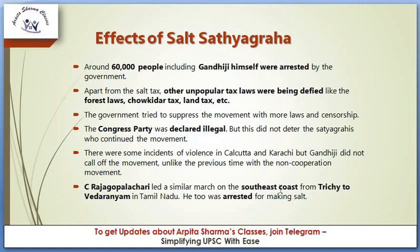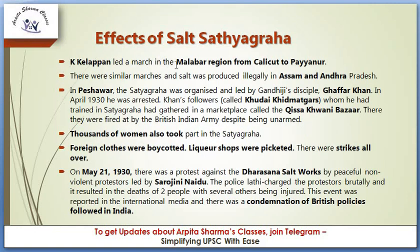C. Rajagopalachari led a similar march on the southeast coast from Trichy to Vedaranyam in Tamil Nadu and was arrested for making salt. K. Kelappan led a march from the Malabar region from Calicut to Payanur. There were similar marches in Assam and Andhra Pradesh. In Peshawar, the satyagraha was led by Gandhiji's disciple Khan Abdul Ghaffar Khan. When Khan was arrested in April 1930, his followers, the Khudai Khidmatgars, gathered at Kissa Khawani Bazaar, where they were fired upon by the British Indian Army despite being unarmed.